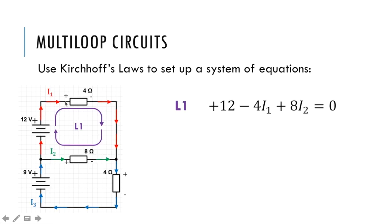Next we move through the top resistor from positive to negative so that's a drop. So we're going to subtract the potential difference across this resistor. Since it's a resistor we usually don't know the voltage so we need to use V equals IR. The potential difference V across the resistor is the current I1 times the resistance which is 4 ohms, so we do I1 times 4. So 4I1 is the potential difference across this resistor — that's just coming from V equals IR.